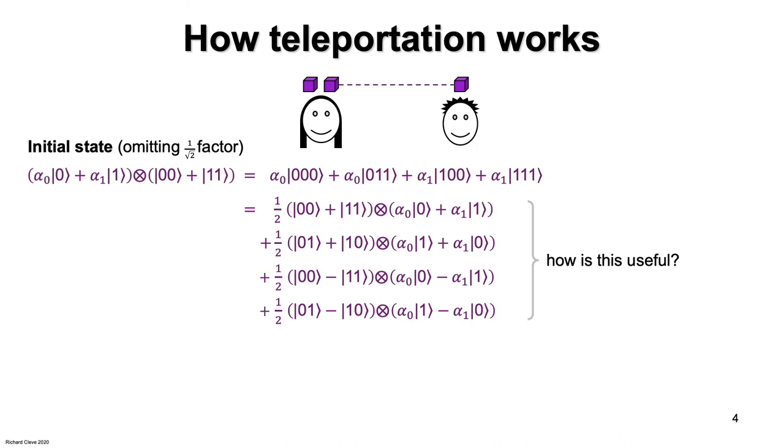The next question is, if they are equal, how is this useful to be able to express it this way? Well, there's something remarkable about this expression because at the beginning, the first qubit is what contains the interesting information, the alpha zero and the alpha one. But if you look at this four line expression, you see that the alpha zero and alpha one, they're associated with the third qubit, which is on Bob's side. So it's almost like before Alice and Bob even did anything, somehow the coefficients alpha zero and alpha one have migrated over to Bob's side.